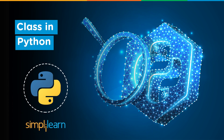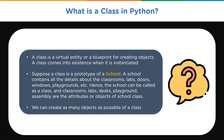What is a class in Python? A class is a virtual entity or a blueprint for creating objects. A class in Python provides some means of bundling data and functionality together. You can think of a class as a school — the school becomes your class, and it has attributes like students, classrooms, labs, and playgrounds. These classrooms, labs, desks, and playgrounds are attributes or objects of that class.